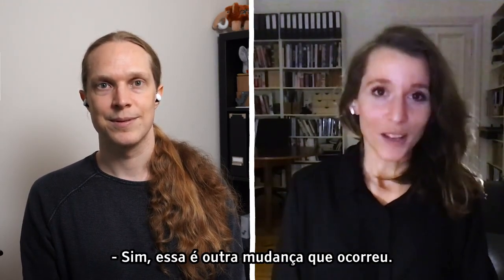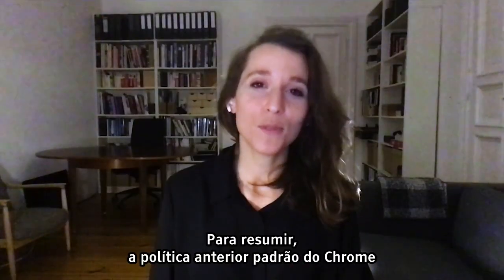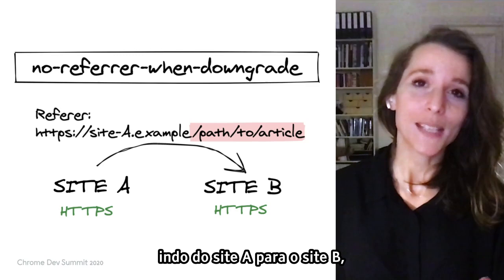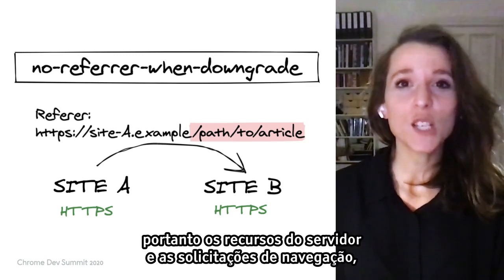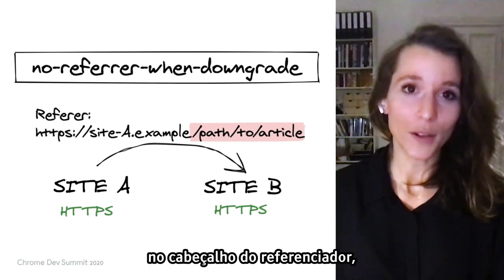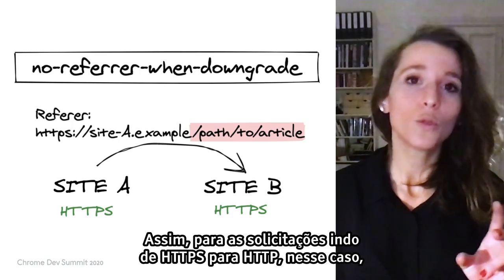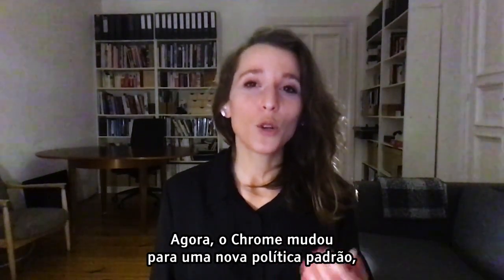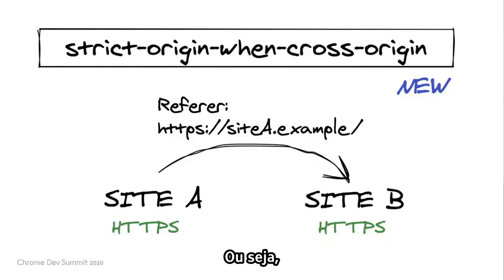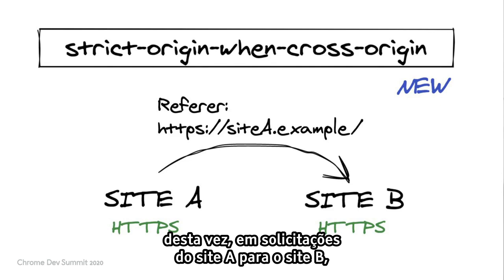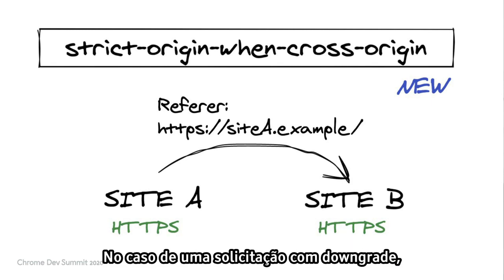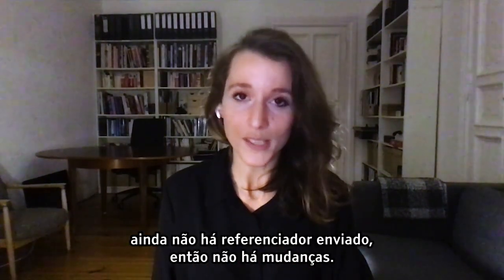That's another change that's gone out. Chrome's previous default referrer policy was no-referrer-when-downgrade. What that meant is that for HTTP requests going from site A to site B — both subresource and navigation requests — site B would see the full URL of the requesting page in the Referer header, except if it's a downgraded request (HTTP to HTTP), in which case there would be no Referer header sent at all.